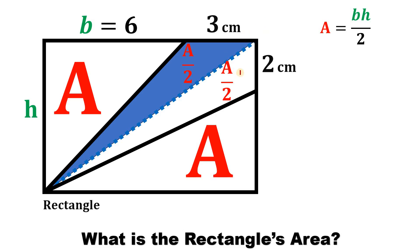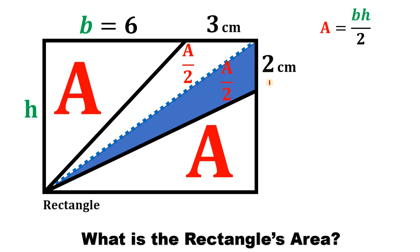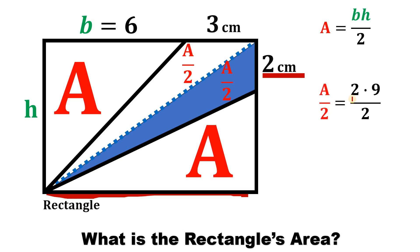We now know the length of this rectangle: three plus six equals nine centimeters. To finish this question, let's use the area of this triangle. We know the base, which is two centimeters, and we know the height, which is six plus three, so the height is nine. We can write the area as A over two equals two times nine divided by two.